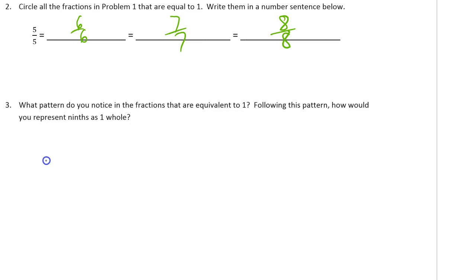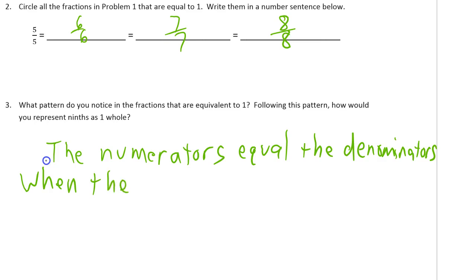What pattern did you notice in the fractions that are equivalent to one? Following this pattern, how would you represent ninths as one whole? I'm noticing that there's a lot of ways you can say this, but I like to, whenever I can, I like to use the math vocabulary. The numerators equal the denominators. Better to have names and say the top number or the bottom number. It's a numerator. It's a denominator.